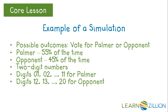We will disregard the numbers 21 through 99. If we use the digits 01 through 20, 55% of 20 is 11, so we need 11 digits to represent a vote for Palmer. Palmer's opponent has 45% of the vote. 45% of 20 is 9, so we need 9 digits to represent a vote for Palmer's opponent. The digits 01 through 11 will represent a vote for Palmer, and the digits 12 through 20 will represent a vote for Palmer's opponent.